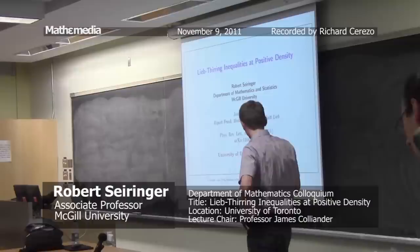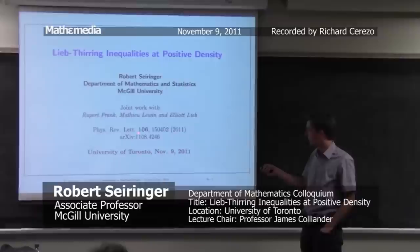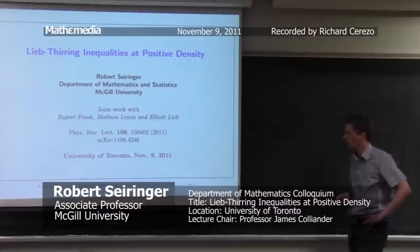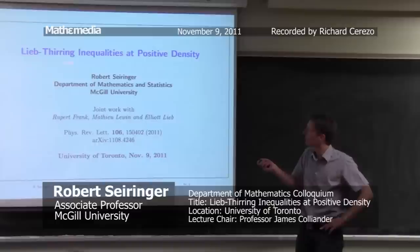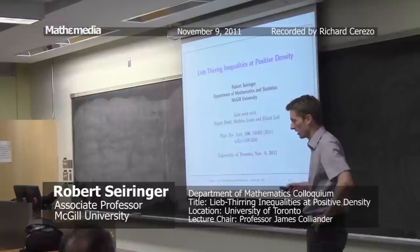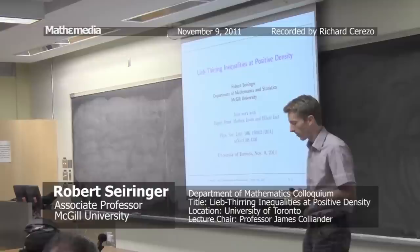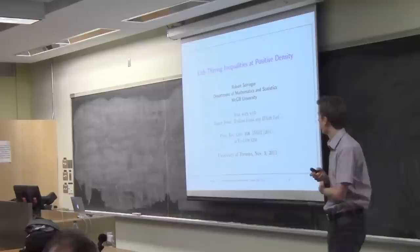You've heard about the title; I will explain what these things actually mean. This work I'm talking about is joint work with Rupert Frank, Mathieu Levine, and Elliott Lieb. There is a short paper in Physical Review Letters which explains the physics behind this and the physical consequence and interpretation of these inequalities. The detailed mathematics are written up in a longer paper which you can find in the archive.